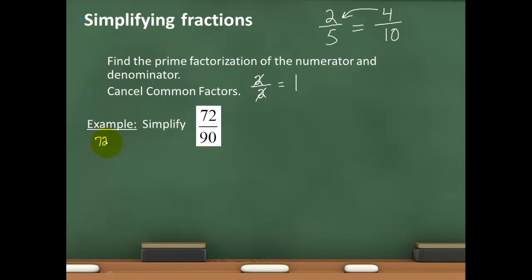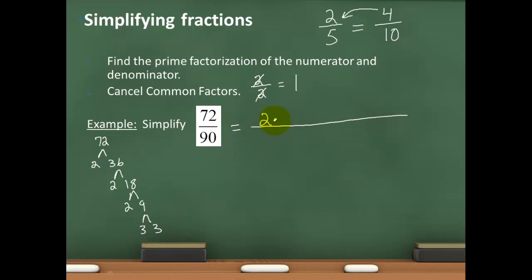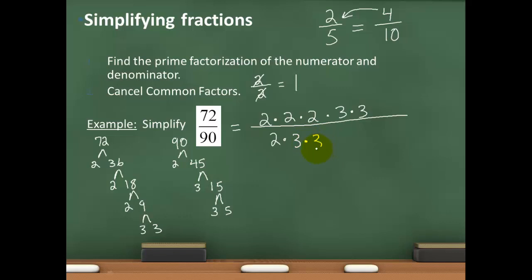Starting with 72 using a factor tree: 72 is 2 times 36, 36 is 2 times 18, 18 is 2 times 9, and 9 is 3 times 3. So 72 equals 2 × 2 × 2 × 3 × 3. Now for 90: 90 is 2 times 45, 45 is 3 times 15, and 15 is 3 times 5. So 90 equals 2 × 3 × 3 × 5.